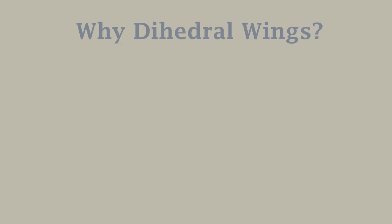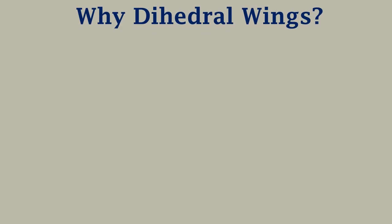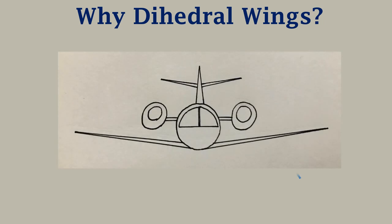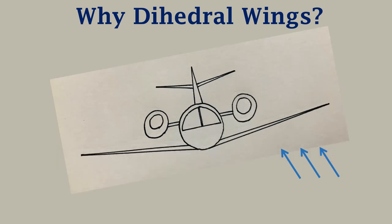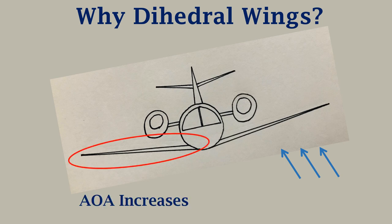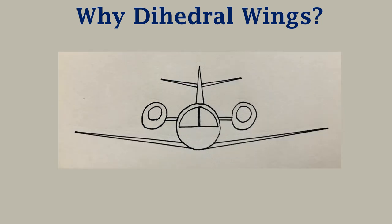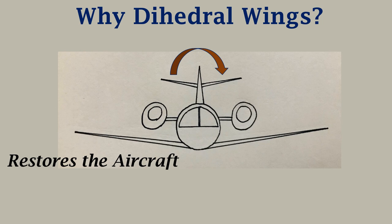Now we will see why aircraft have dihedral wings. Let's consider an aircraft in flight which is subject to a disturbance in roll, or a disturbance about the longitudinal axis. Because of the disturbance, the angle of attack on the down-going wing increases, which means that more lift is created on this wing. This increase in lift tends to restore the aircraft to its original attitude, which means that the dihedral wings provide positive roll stability to the aircraft.